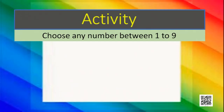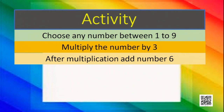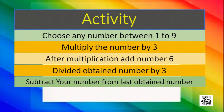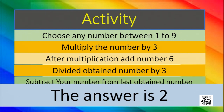Let's perform this activity. Open up your copies and pen. Now start with this: choose any number between 1 to 9. Then multiply the number by 3. Then, whatever you got, add the number 6 with that. Now divide this obtained number by 3. Now, subtract the number you chose — the first number which was obtained by you, subtract from the obtained number. I can guess your answer. Here, your answer is 2.